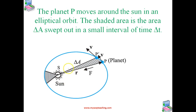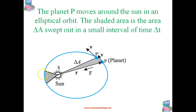In this figure, the planet P moves around the sun in an elliptical orbit. The shaded area, delta A, is the area swept out in a small interval of time, delta T. In equal time it sweeps equal areas. When the planet is farther from the sun it moves a little slower; when it is nearer, it moves a little faster. This is the second law of Kepler.